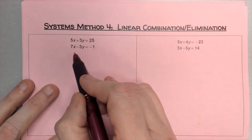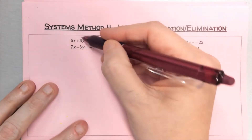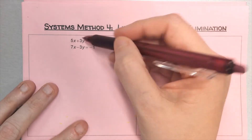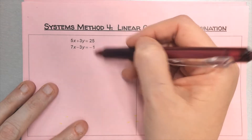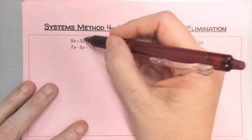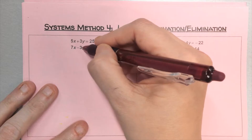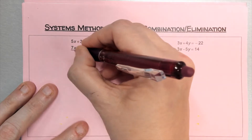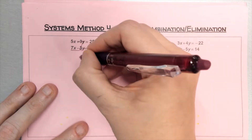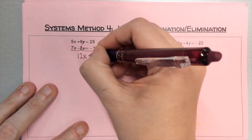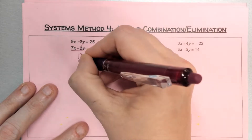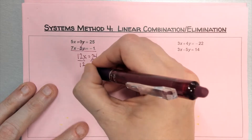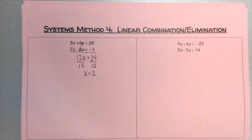For example: 5x plus 3y equals 25, and 7x minus 3y equals negative one. Both equations are in standard form with x, y, equals sign, and constants lined up. I have 3y and negative 3y — a zero pair — so they cancel. Five plus seven is twelve x's, and 25 minus 1 is 24.